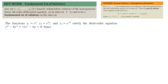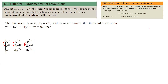Now, are these linearly independent from each other? Let us form the Wronskian. On the first row, list these functions: e^x, e^(2x), e^(3x). On the second row, their first derivatives: e^x, 2e^(2x), 3e^(3x). On the third row, the second derivatives: e^x, 4e^(2x), 9e^(3x).